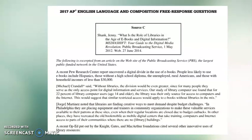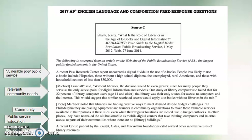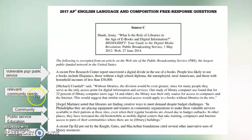Here's another source — Source C: community. When I'm reading through this, I'm finding the ideas that I've already pulled out from the prompt. I found something about vulnerable populations and public service. I found something about how libraries are still relevant and how they fit the community's needs. Here, developing a community. Here, public service and education. Here, possibilities and how they can stay relevant — so forth and so on.